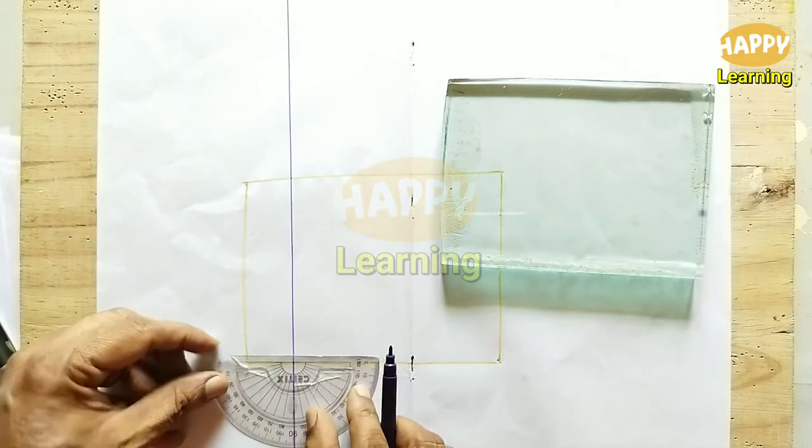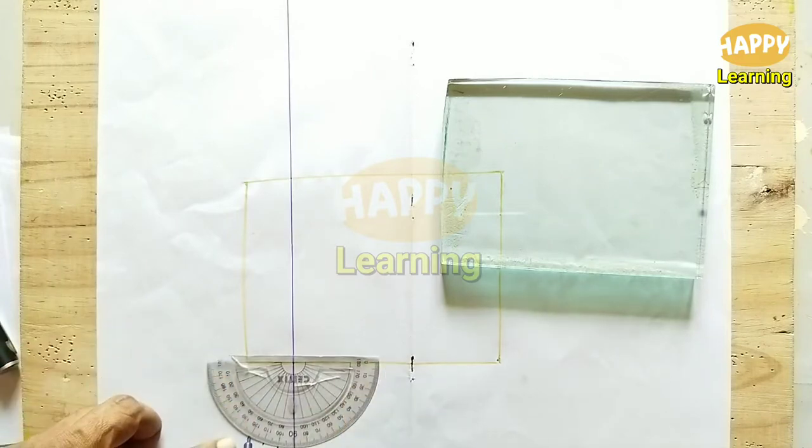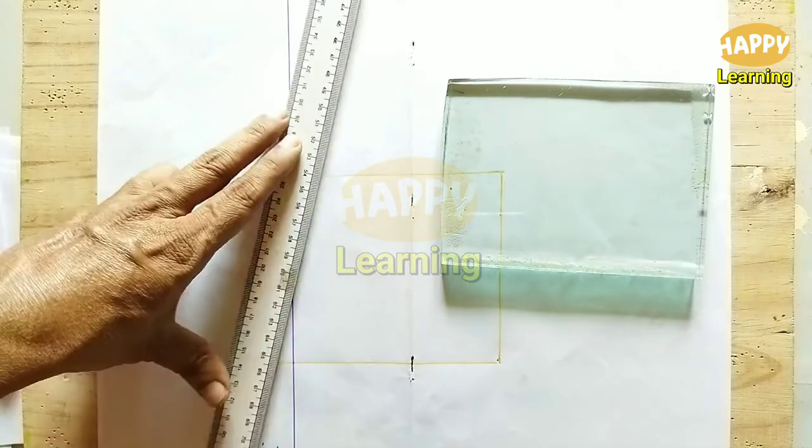And at that point, using the protractor, note down the angles 10, 20, 30, 40 and so on.